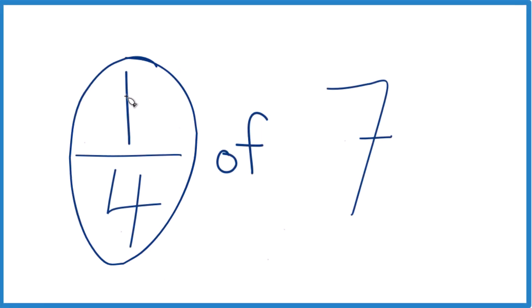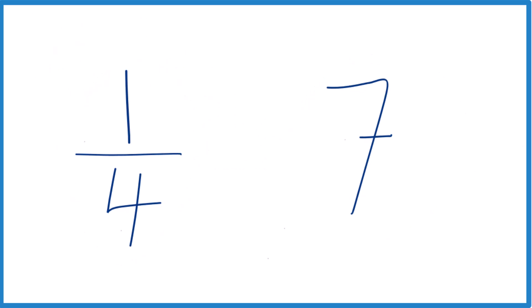So how do you find one-fourth of 7? The first thing you can do is take that of, and instead of of, let's call that times. So we're going to multiply one-fourth times 7. That's the same thing as one-fourth of 7.